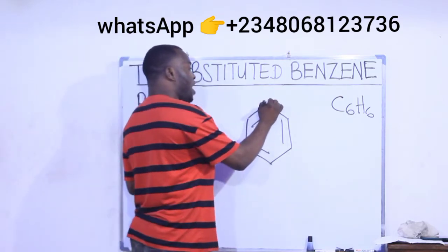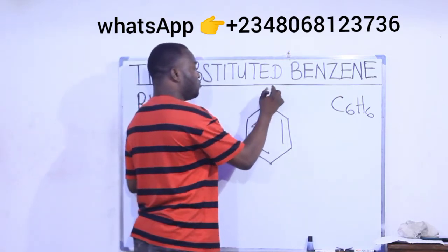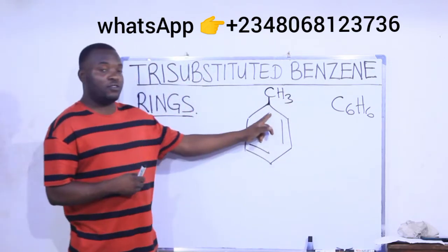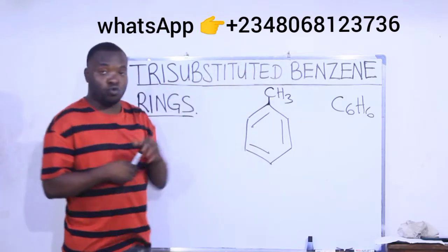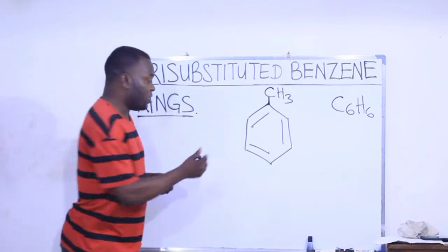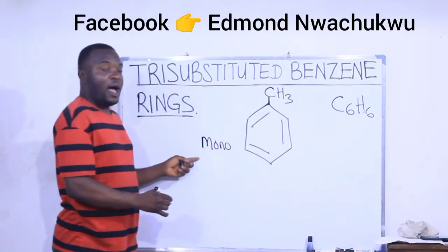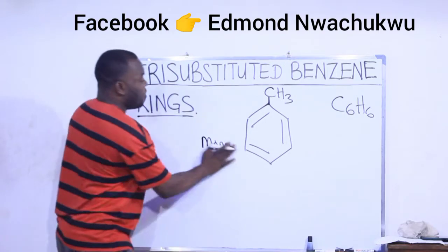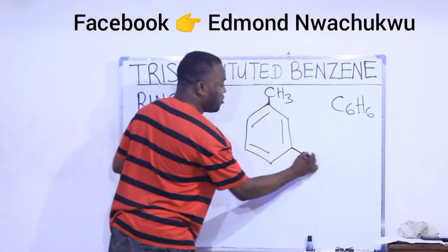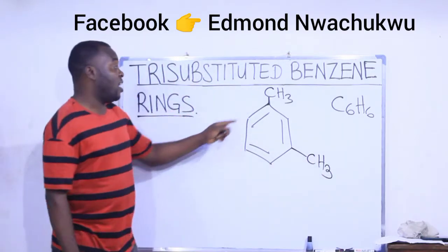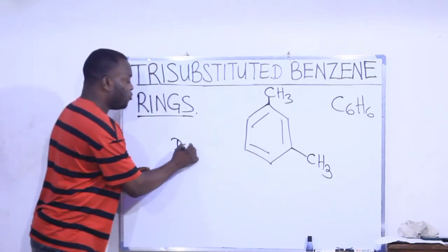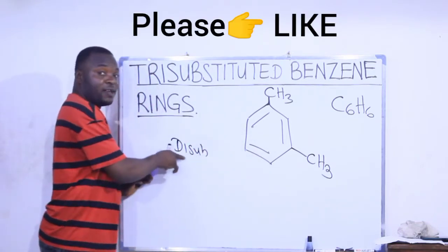If I remove the hydrogen atom on one carbon and replace it with something like a methyl group, this is called a monosubstituted benzene ring — mono means one. Now if I replace another hydrogen on this same compound, removing the H here and replacing it with another methyl, I have replaced two hydrogens on the ring. In that case we call it a disubstituted benzene ring — di means two.